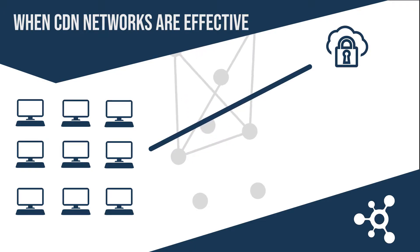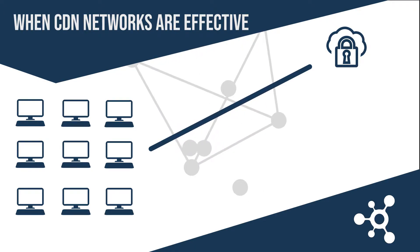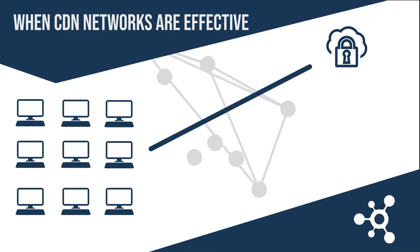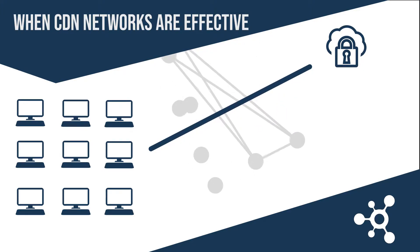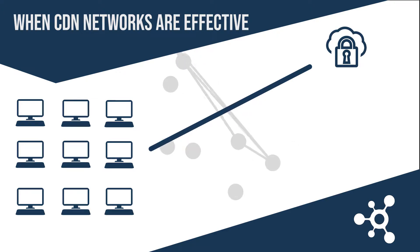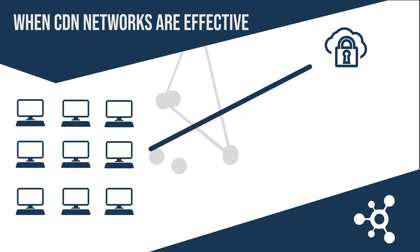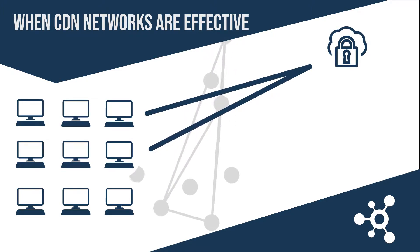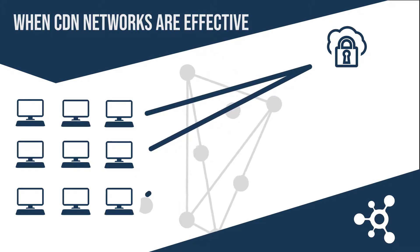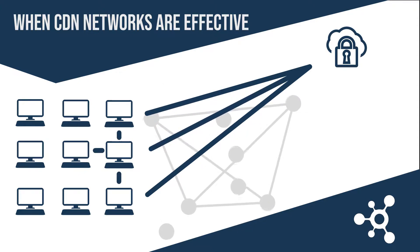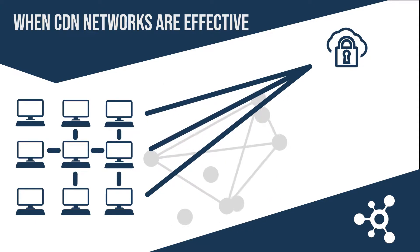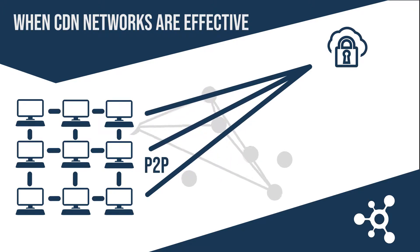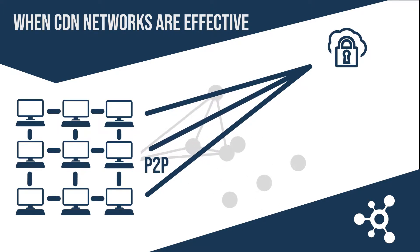Every game device gets the data from the same server rather than connecting to other game devices that have already been updated. A more efficient procedure exists. Once several game devices have received updates from the server, they begin to pass those updates directly to other game devices. This kind of network is called peer-to-peer because the network does not depend on a centralized server to manage data distribution. Instead, each member of a network can transfer verified and encrypted data to every other node that it is connected to.